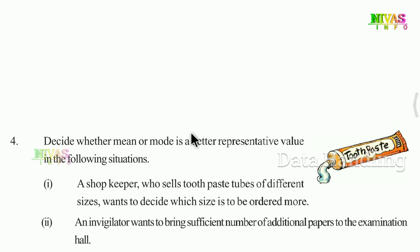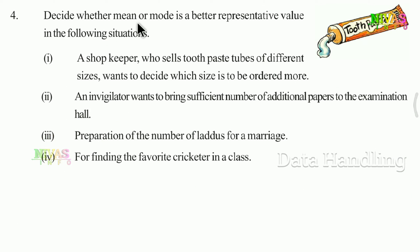Next question: Decide whether mean or mode is a better representative value in the following situations. The first situation is: a shopkeeper sells toothpaste tubes of different sizes and wants to decide which size to order more.